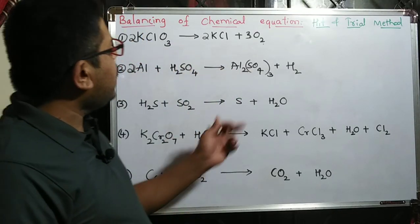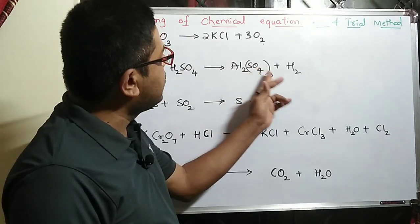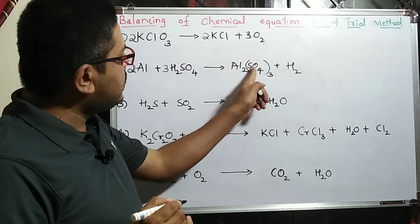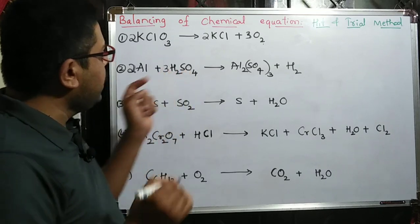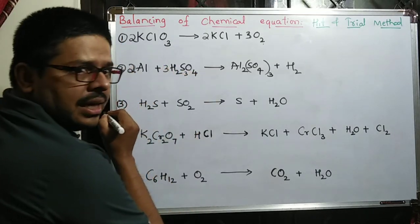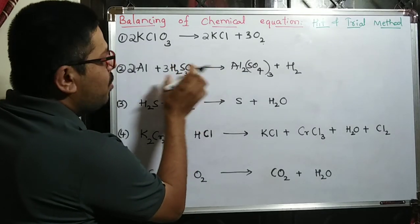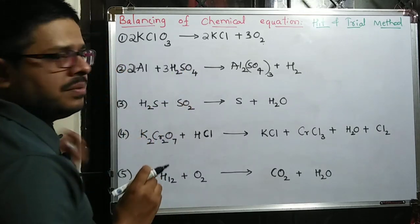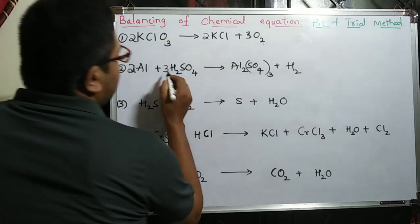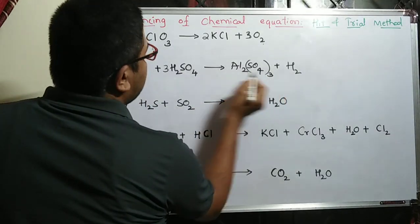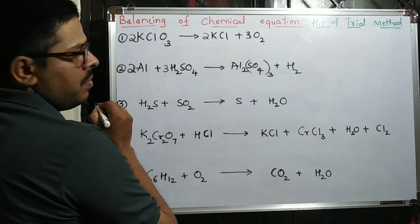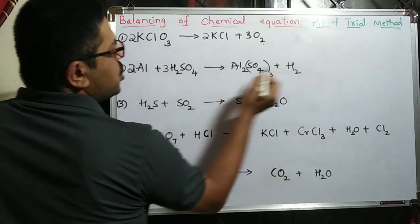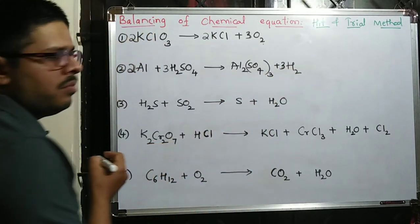Now look at sulfur: S3 is there in Al2(SO4)3, so write 3 before H2SO4. You cannot write S3 inside the formula — the sulfuric acid formula is H2SO4, not H2S3O4. With 3 H2SO4, three sulfurs are balanced. Oxygen: four threes are 12 on each side — oxygen balanced. Hydrogen: 3 H2 gives 6 H, and we write 3 before H2 on the product side. The reaction is balanced.